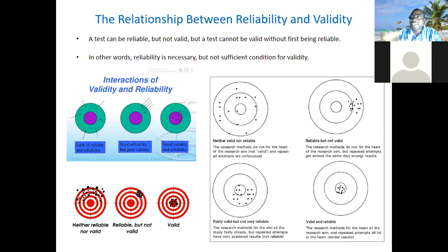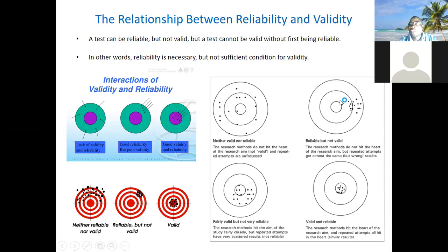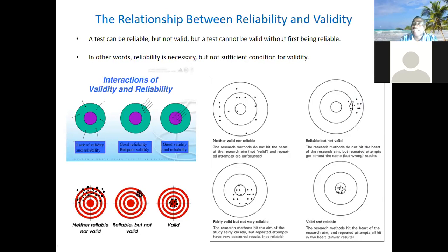Reliability must be there — it's a necessary condition, but not sufficient for validity. For validity, the instrument must first be reliable, and then with some other properties it has to be valid. It's not possible for an instrument to be valid without being reliable. If it's not reliable, it cannot be valid.